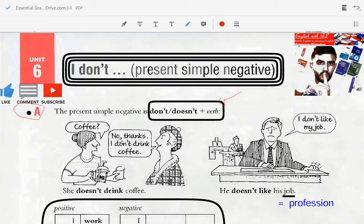Coffee? No thanks, I don't drink coffee. She doesn't drink coffee. I don't like my job. He doesn't like his job. A synonym for job, for example, is profession.